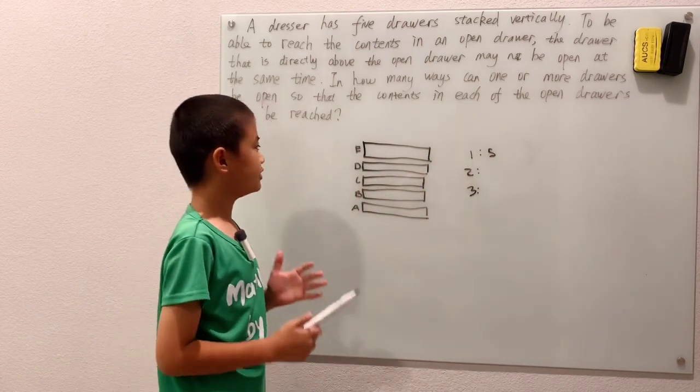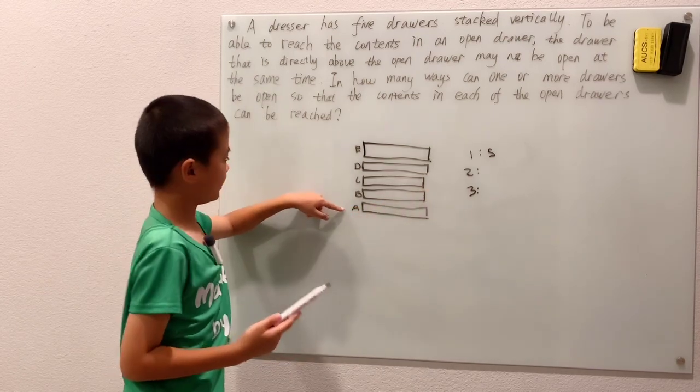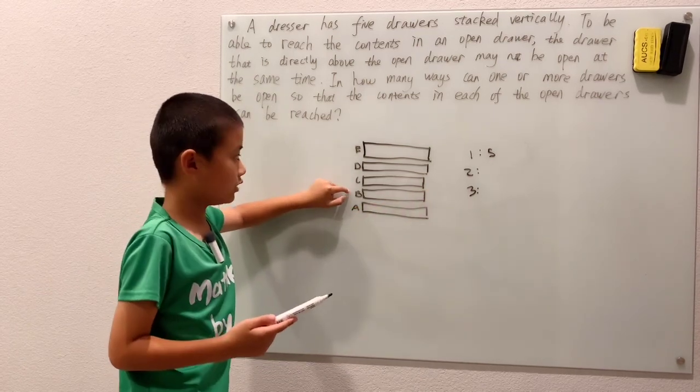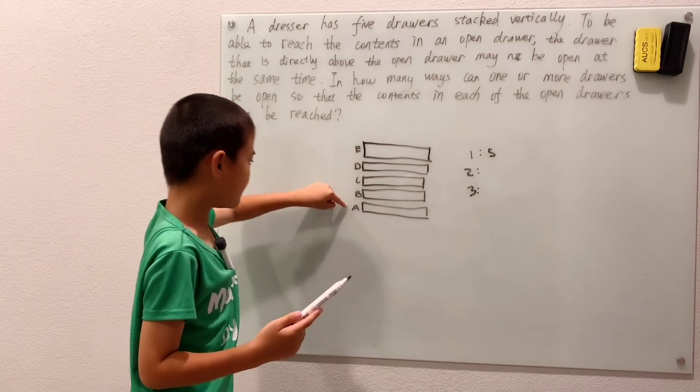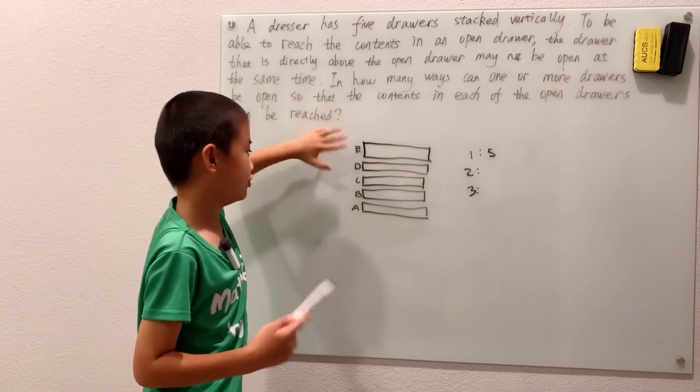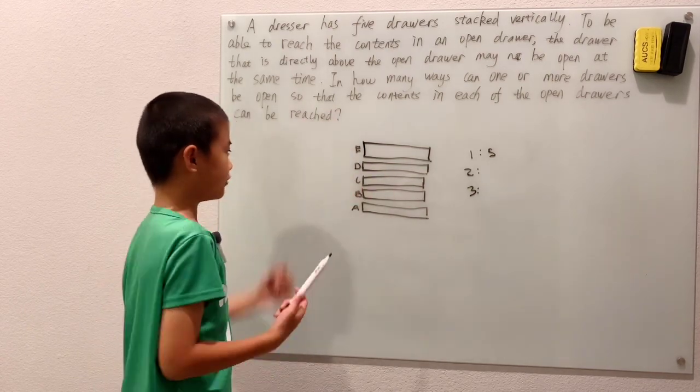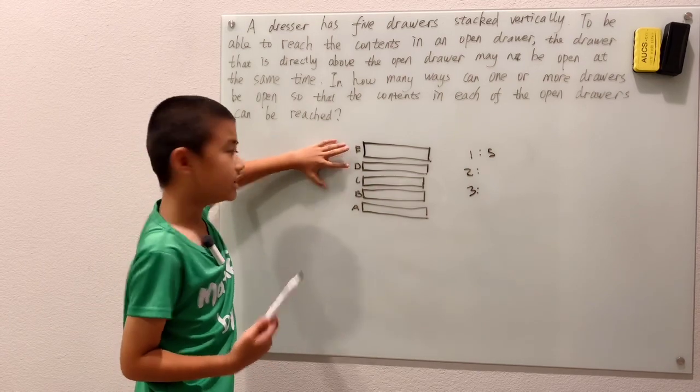For two, it's a little harder. So say we pick drawer A. Well, we can't pick drawer B or else we can't reach drawer A. Once you pick drawer A, we have to pick drawer C, D, or E. Any of those are good. And for drawer B, we pick drawer B to open first. Well, then we have E and D to worry about.